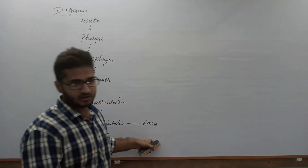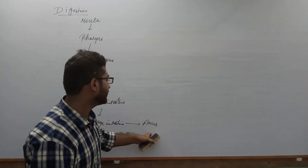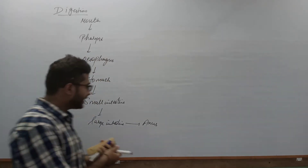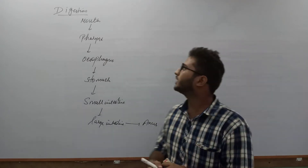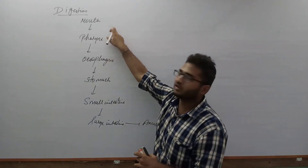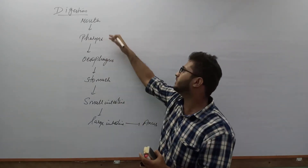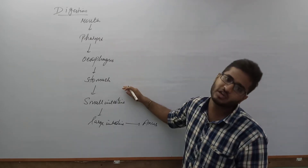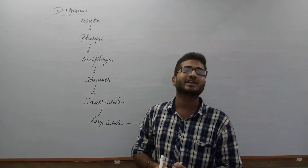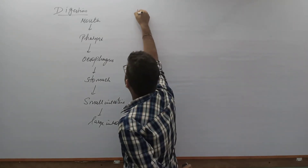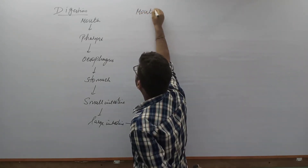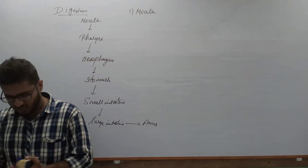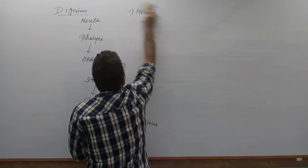From the anus, undigested waste material is removed from the body. Let us first discuss about the mouth parts — what actual processes of digestion take place in the mouth — and then we will cover each part of the alimentary canal involved in digestion. The topic is: digestion in mouth.